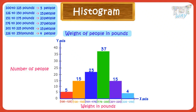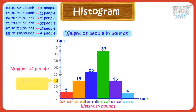And our histogram is ready! We can read it like: there are 5 people in the range of 100 to 125 pounds, 15 people in the range of 126 to 150 pounds, and so on.